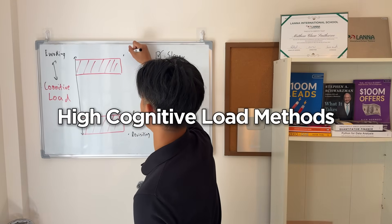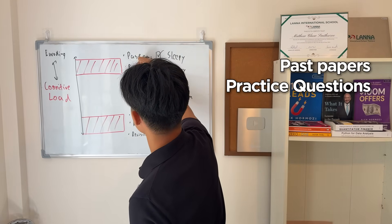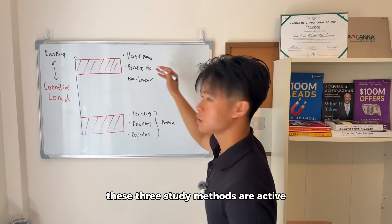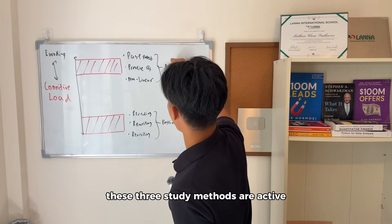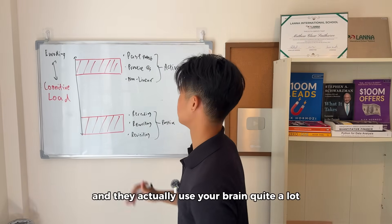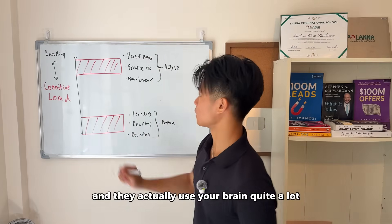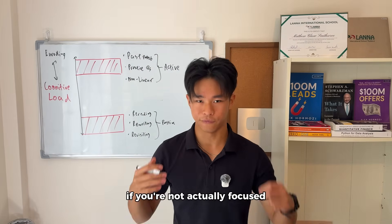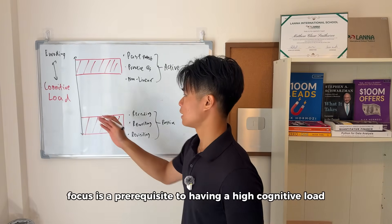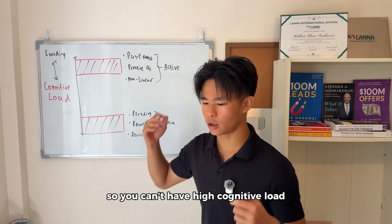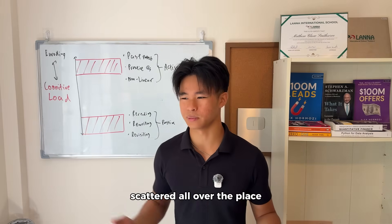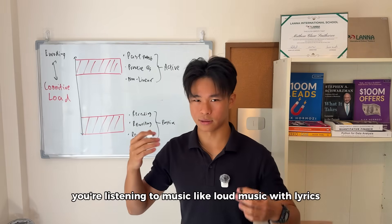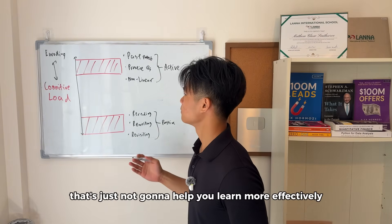Now let's look at some high cognitive load methods: past papers, practice questions, and nonlinear notes. These three study methods are very active and they actually use your brain quite a lot. Doing past papers is simply not possible if you're not actually focused. Focus is a prerequisite to having a high cognitive load. You can't have high cognitive load if your brain is scattered — scrolling on your phone, listening to loud music with lyrics — that's just not going to help you learn more effectively.